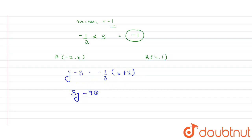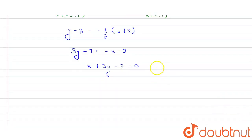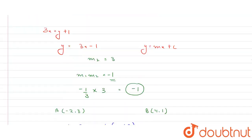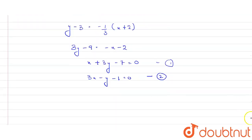Solving: 3y - 9 = -x - 2, giving x + 3y - 7 = 0. This is equation number one. The second equation given is 3x - y - 1 = 0. Now let's solve these two equations simultaneously.